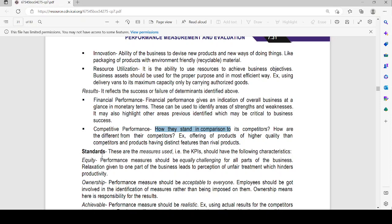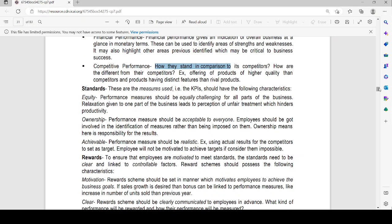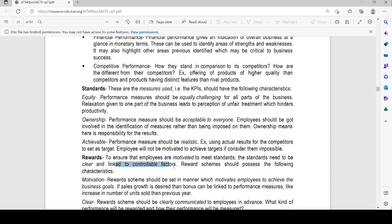Standards. These are measured using the KPIs. Key performance indicators should have the following characteristics. Equity. Performance measures should be equally challenged. Ownership. Performance measures should be acceptable to everyone. Achievable. Performance measures should be realistic. Ensure that employees are motivated to meet standards. Standards need to be clear, linked to controllable factors and motivation.